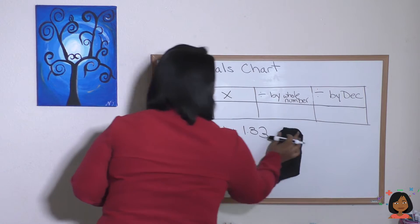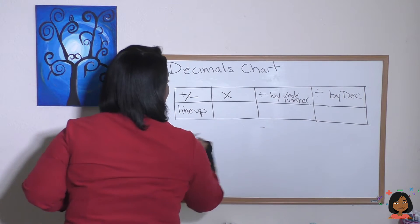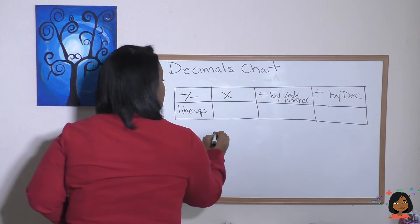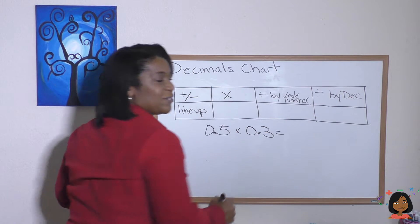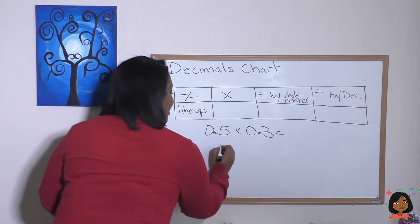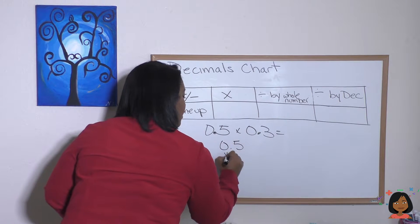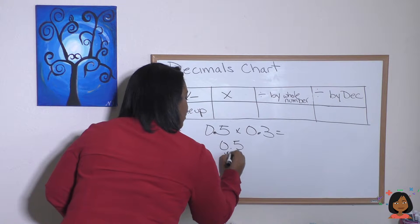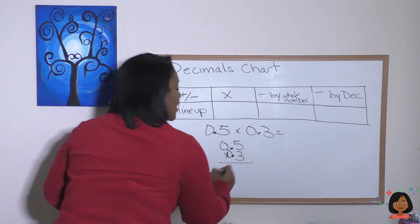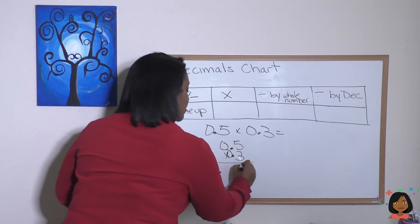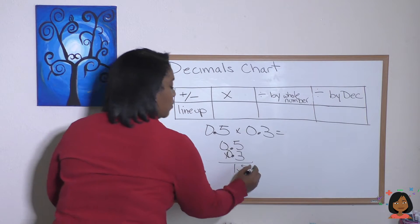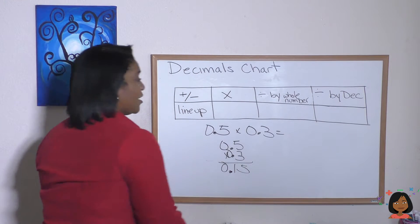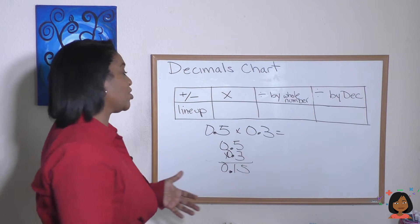Let's take a look. If I was doing 0.5 times 0.3, I'd write it like this. There's my decimals. I would multiply: five times three is fifteen. Then I would count my decimals—one, two—and place them in here. So for multiplication, we multiply and then count our decimals.